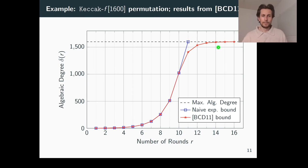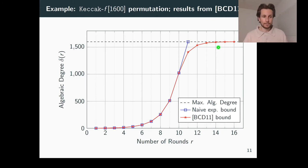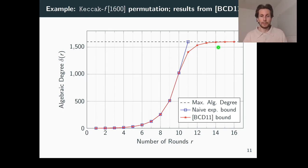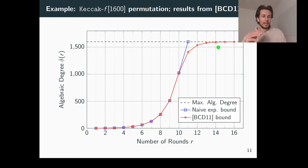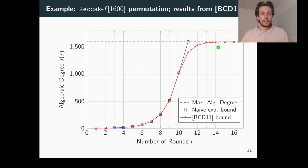I suspect this saturation stems from the particular connection of the algebraic degree of a permutation with the degree of its inverse permutation. An example of this connection is that it takes as many rounds to reach maximum algebraic degree in the forward direction as in the backward direction. It could be interesting to explore this connection, because our bound as currently formulated does not incorporate this link — I leave it open as future work.